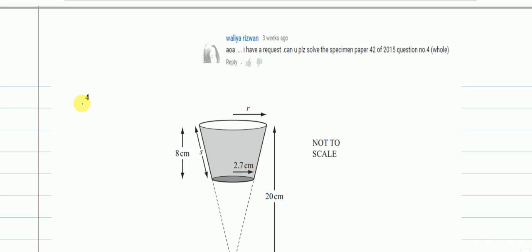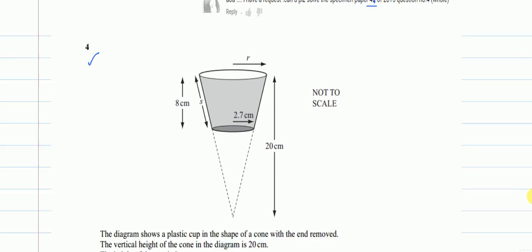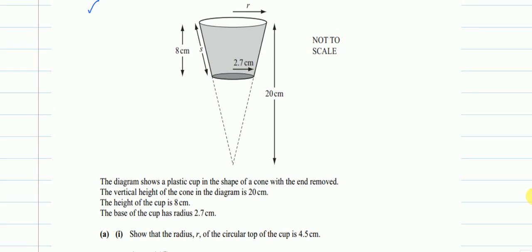Welcome to this video on question number 4 of the specimen paper, paper 4 — there is no variant for the 2015 question. We are given a cone: the diagram shows a plastic cup in the shape of a cone with the end removed. The vertical height of the cone is 20 centimetres, the height of the cup is 8 centimetres, and the base of the cup has a radius of 2.7 centimetres. Part A: show that the radius r of the circular top is 4.5 centimetres.